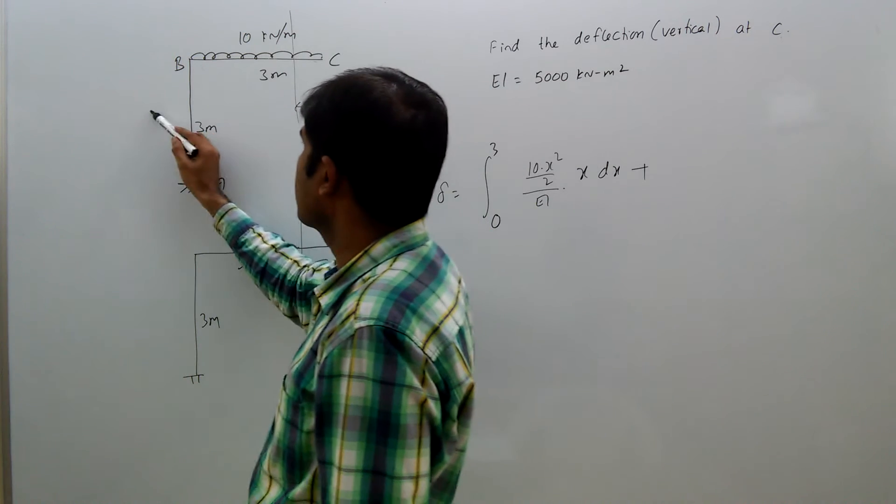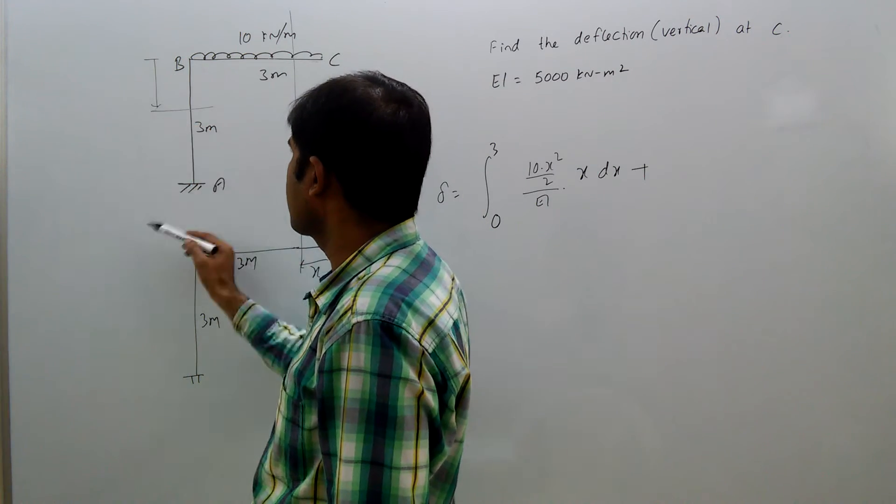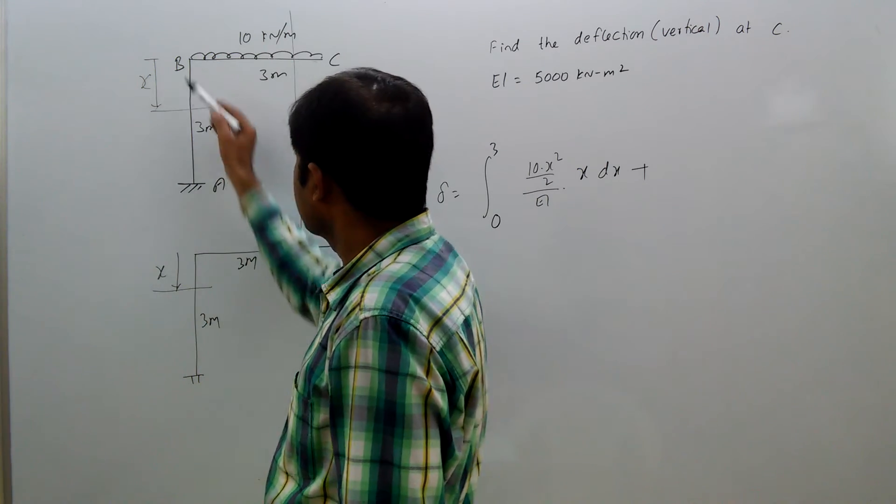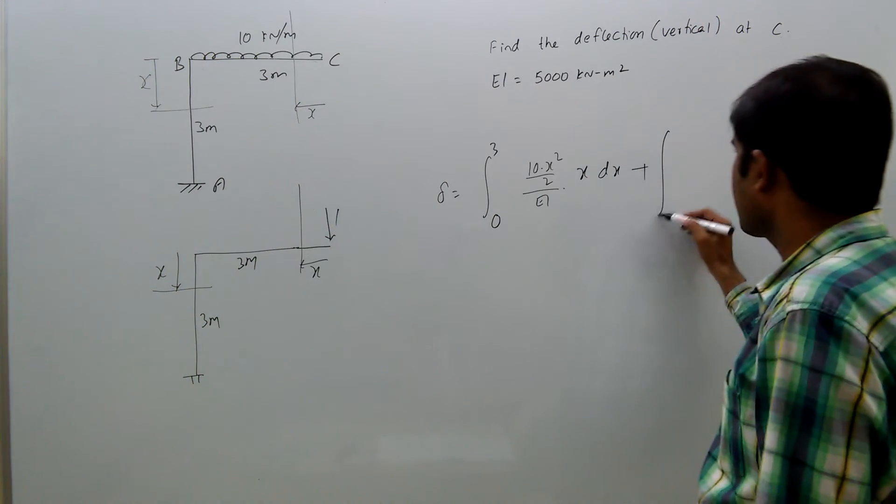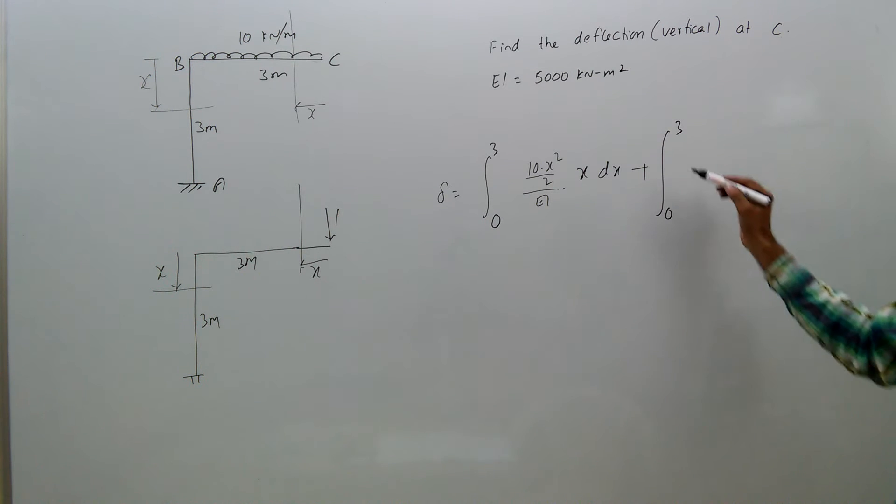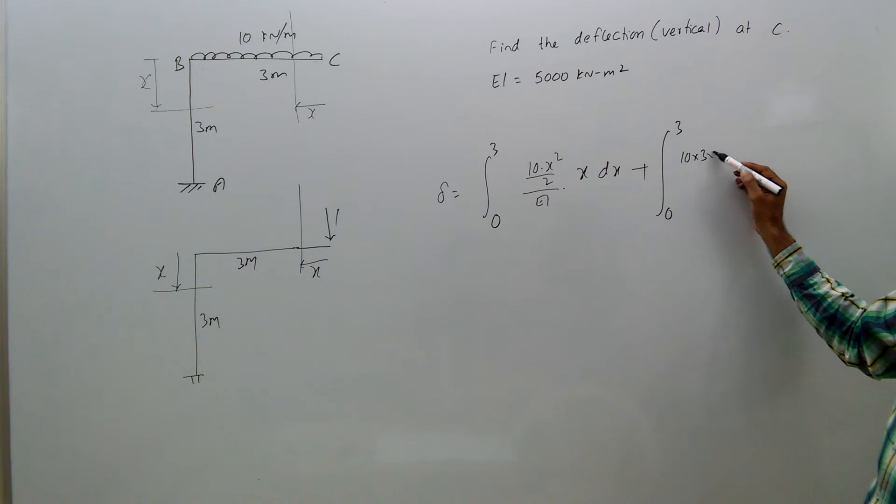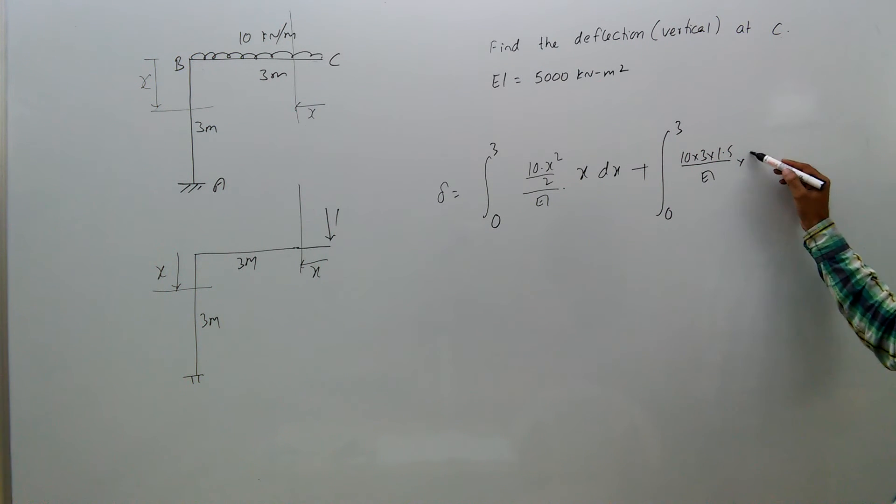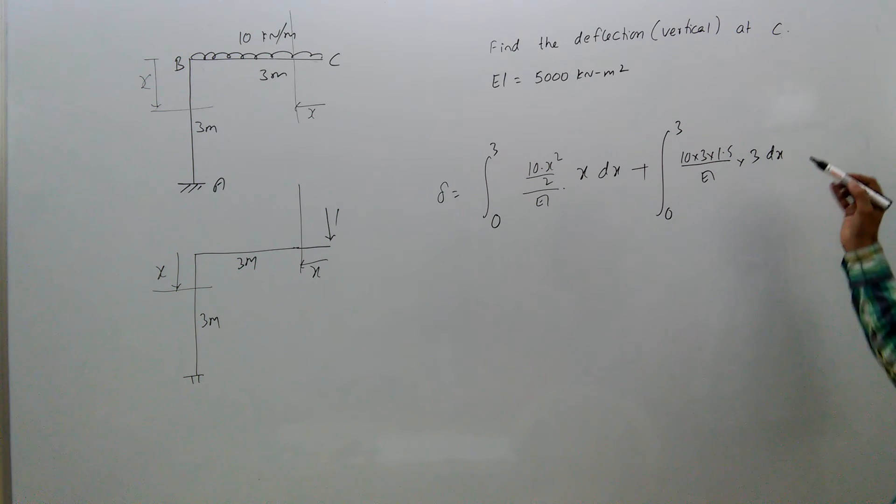at distance x here, and here also at distance x. The M is, that's also integral 0 to 3, M is 10 into x, 10 into 3 into 0.5, by EI. At that location, 1 into 3, that's 3, dx.